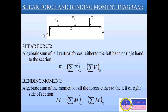Here I am considering a simply supported beam AB, which is subjected by a number of point loads vertically downward. So when this beam is loaded by the external forces, in that condition the internal stresses and strains are produced. So to determine these stresses we must find out the internal forces and the internal couple that act on the cross section of the beam.